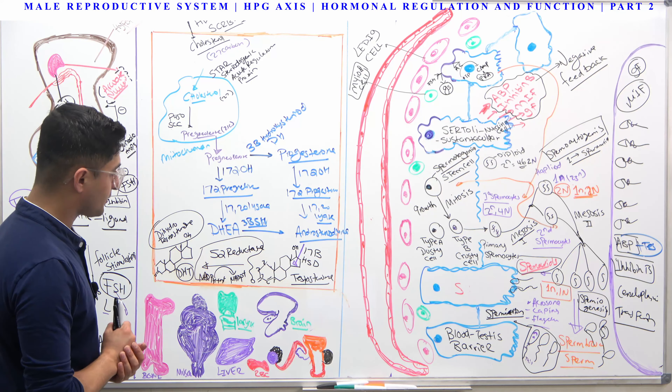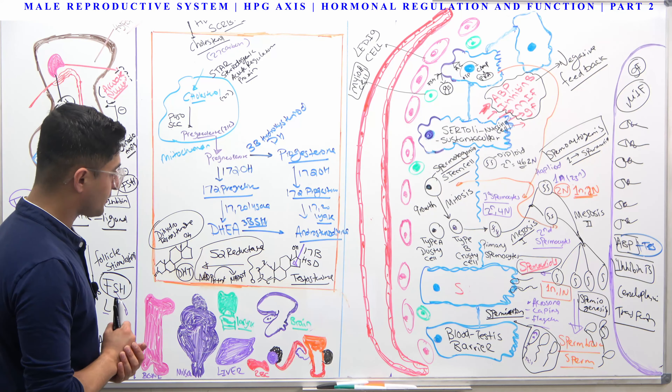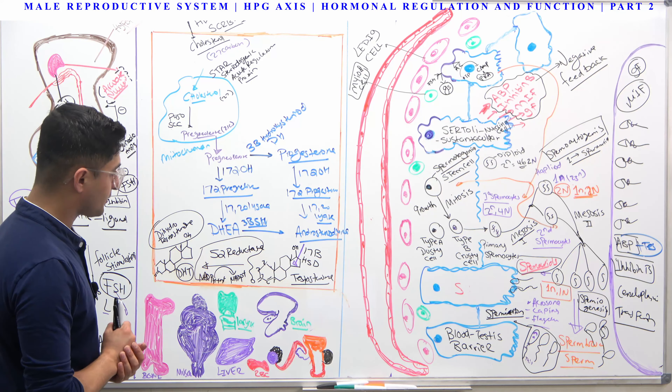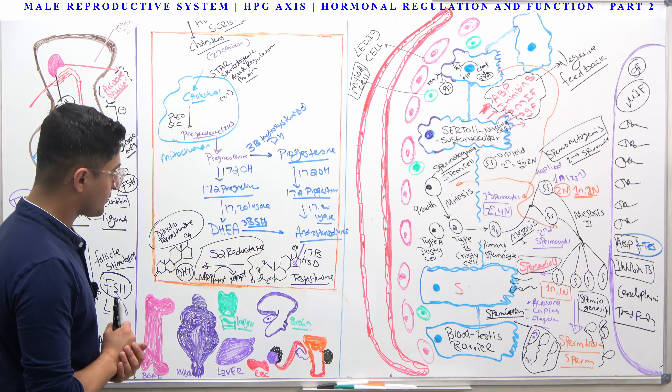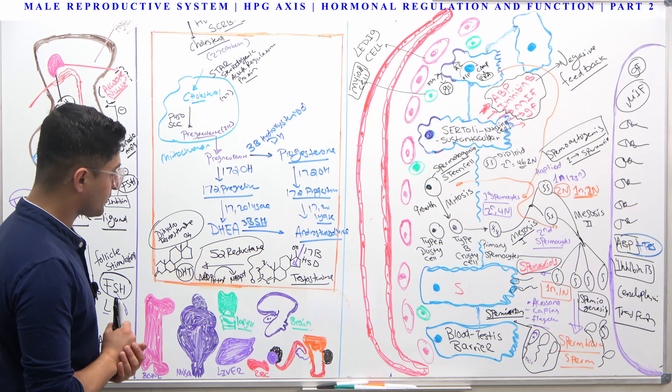In the liver, testosterone increases LDL and VLDL (low-density and very-low-density lipoproteins) but decreases HDL. In red blood cells, testosterone is very important — it stimulates bone marrow to produce more red blood cells, a process called erythropoiesis.